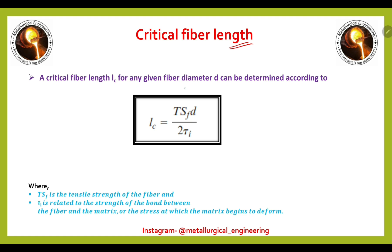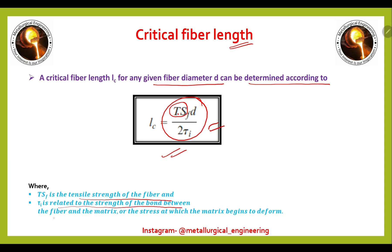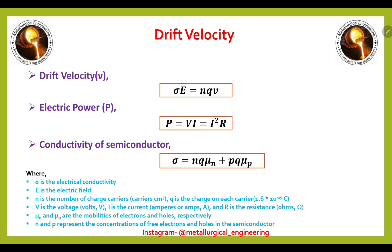About critical fiber length: the critical fiber length L_c for any given fiber diameter D is determined by the formula L_c = (σ_f × D) / (2τ_i), where σ_f is the tensile strength of the fiber, and τ_i is related to the strength of the bond between fiber and matrix, or the stress at which the matrix begins to deform.